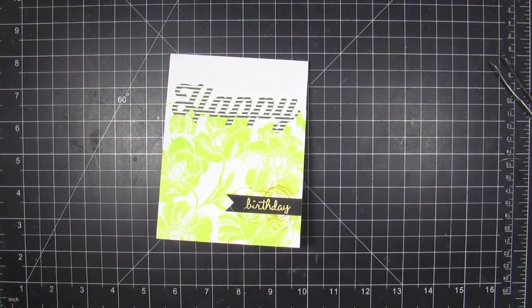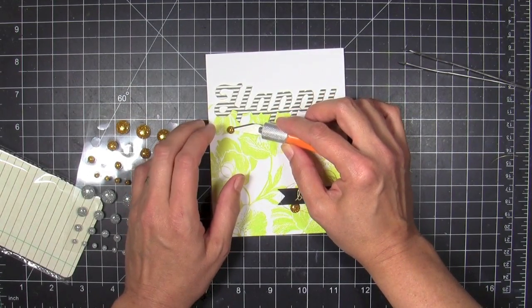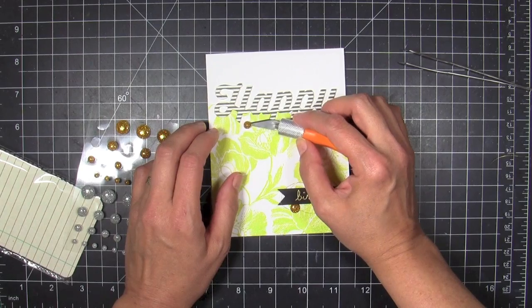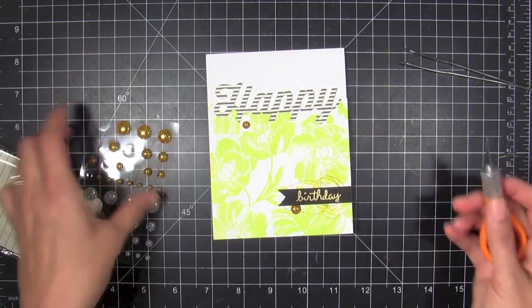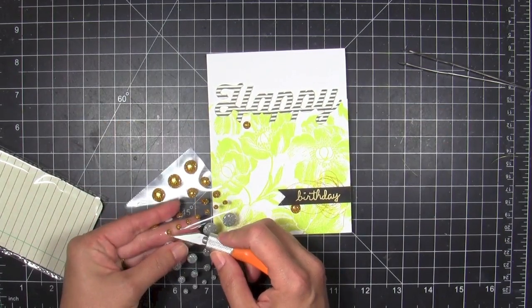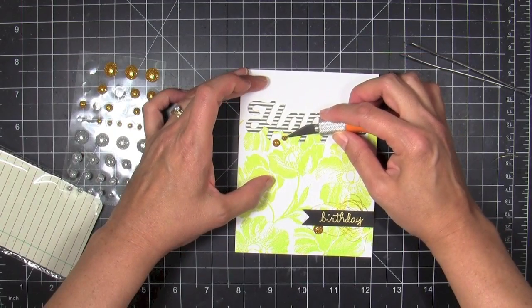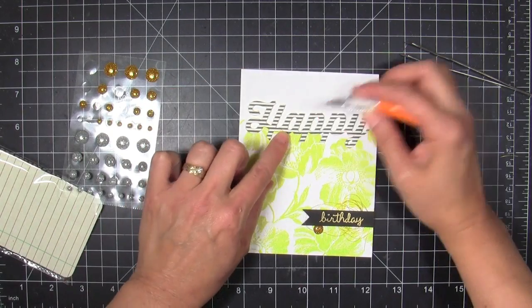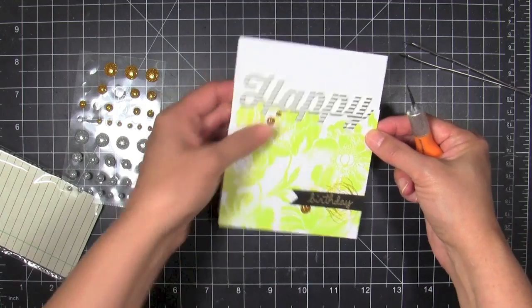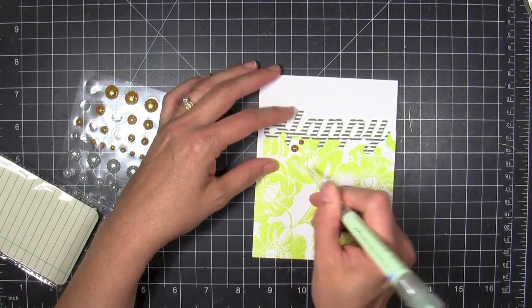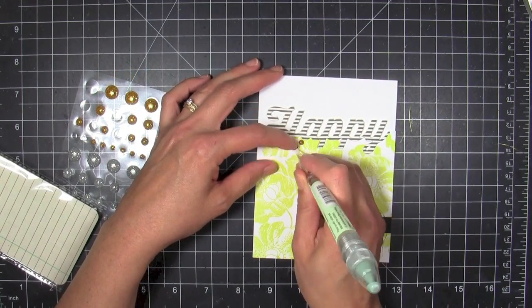Then just for some added bling I'm gonna take some of these enamel dots. These are the candy buttons by Basic Gray but you could also use the Doodle Bug sprinkles that come in a gold glitter, and Studio Calico also makes enamel dots with a gold glitter in them. Now I'm using my craft knife to remove them from the carrier sheet and mount them.